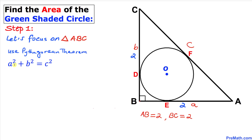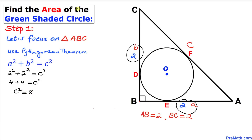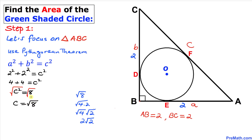Let's fill in the values. A is two, so that's two squared; B is also two, so that's two squared; and these equal C squared. Two squared is four, so four plus four equals C squared, giving us C squared equals eight. Taking the square root of both sides, C equals the square root of eight, which simplifies to two times the square root of two.